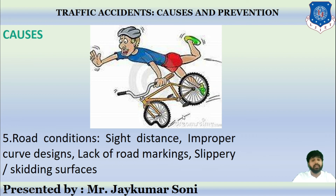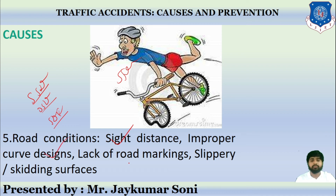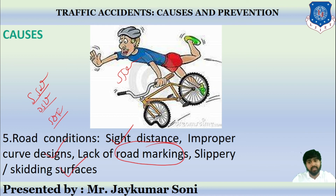Road conditions are also a major cause. If sight distances — namely Stopping Sight Distance (SSD), Overtaking Sight Distance (OSD), and Sight Distance at Intersections (SDA) — are not properly designed, if curve designs are inappropriate, if there is a lack of road markings, or if road surfaces are skidding or slippery, these conditions can cause accidents.